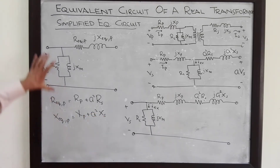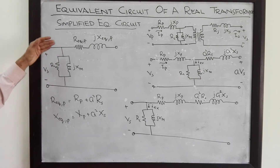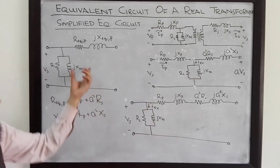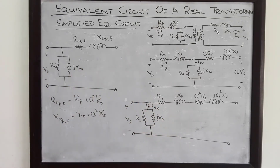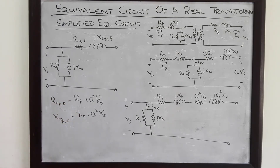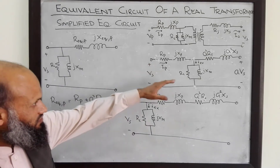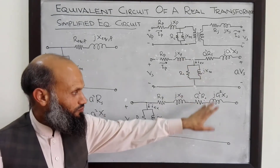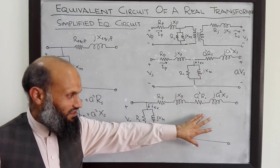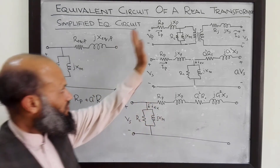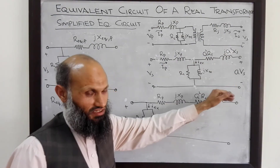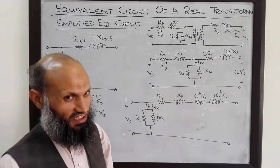So this is the simplified equivalent electrical circuit of a transformer. This is less accurate than the previous one; however, it is much easier to analyze, and we always make a trade-off between accuracy and complexity. What we have done is referred all the quantities to the primary side and obtained a simplified equivalent electrical circuit. We could also have referred all the quantities to the secondary side to obtain an equivalent electrical circuit referred to the secondary side.